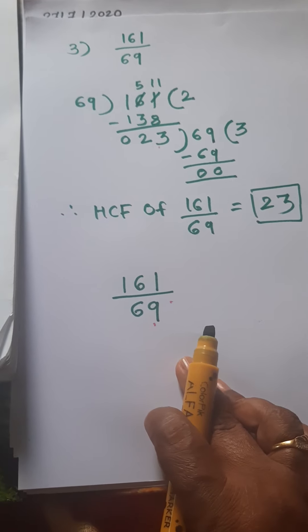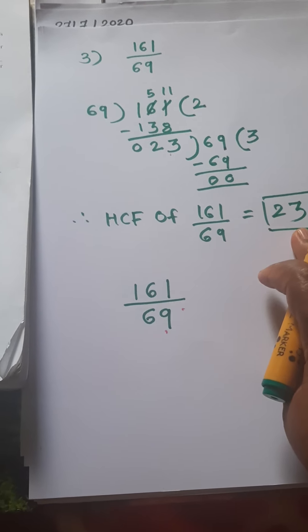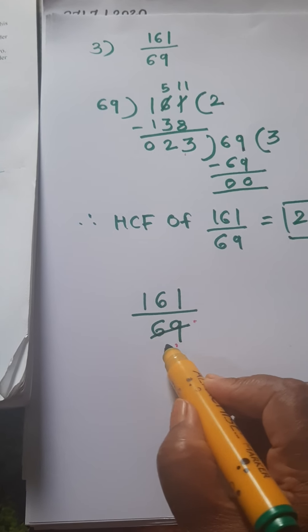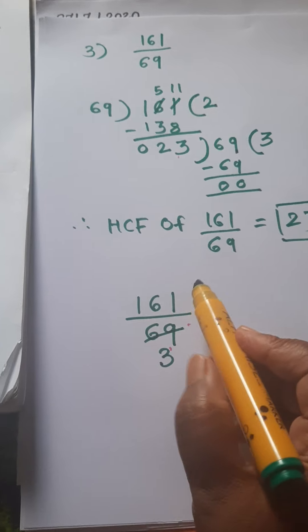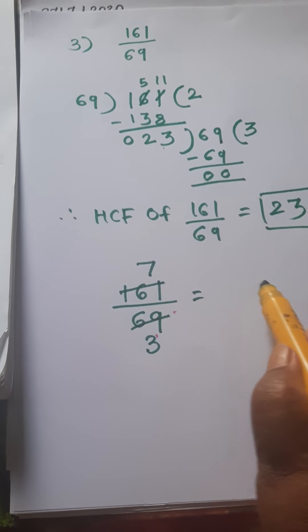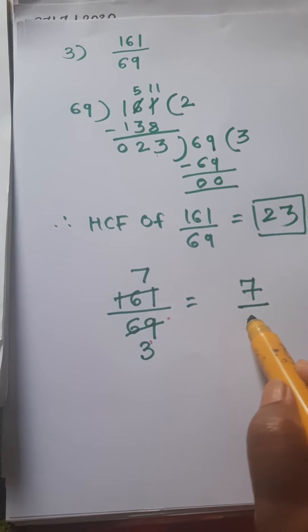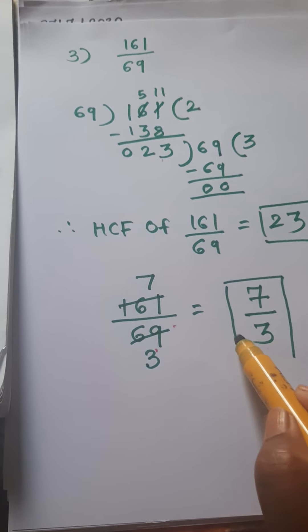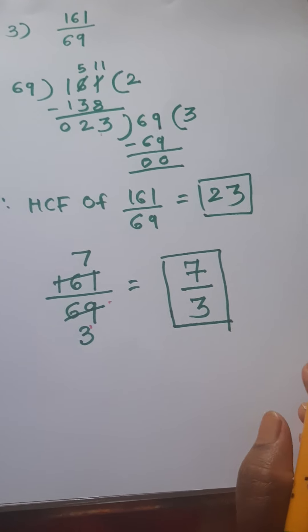These both numbers are present in 23's table. 23 threes are 69 and 23 sevens are 161. 7 and 3 both are prime numbers, so this is the simplest form or reduced form.